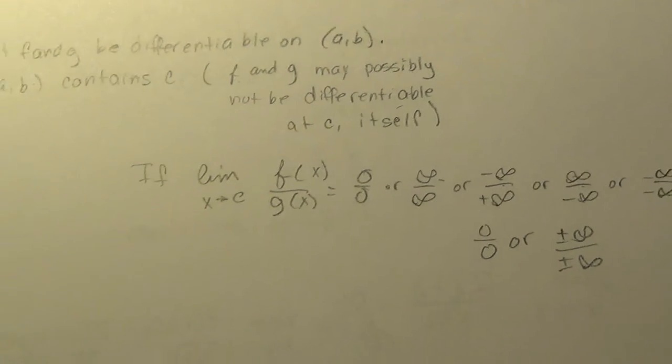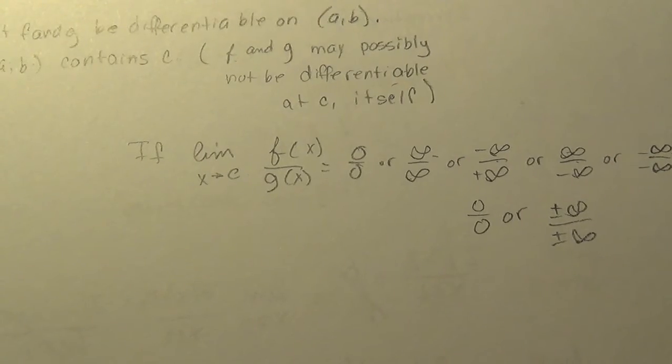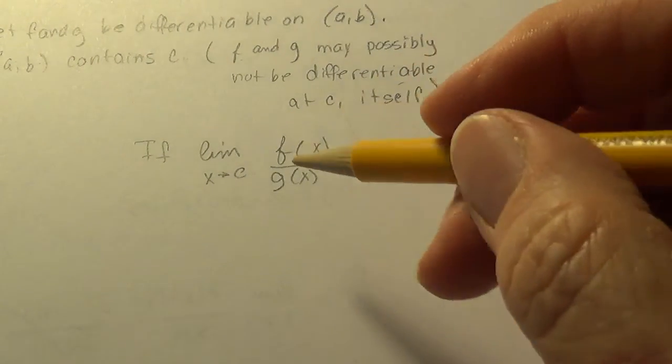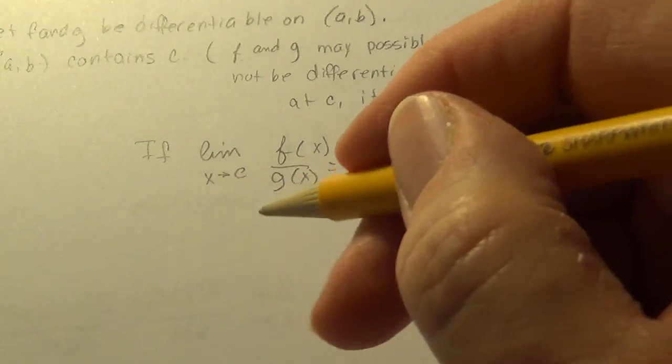Or guess what I'm going to say next - negative infinity over negative infinity. So basically I think of it in my head 0 over 0 or plus or minus infinity over plus or minus infinity, but it's one, two, three, four, these five cases. If that limit equals one of these forms, these indeterminate forms, then...